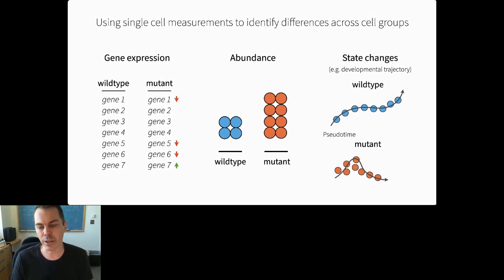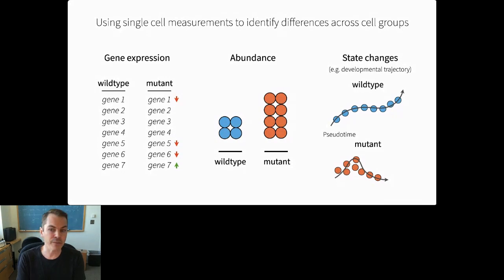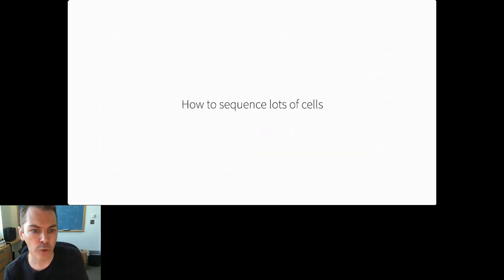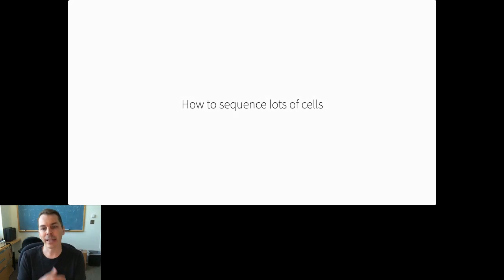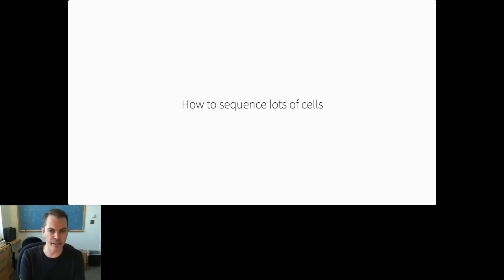Of course, doing single-cell RNA-seq for even small perturbation experiments can be really expensive. So today, mainly what I'm going to tell you about are a couple of tools we've developed to make even very large experiments practical. The first is a technique for doing single-cell sequencing on lots and lots of cells—which we're going to need if we want to profile whole embryos. If we could sequence enough cells, in principle we could measure the expression of every gene in every cell type at every stage of development in the whole animal.